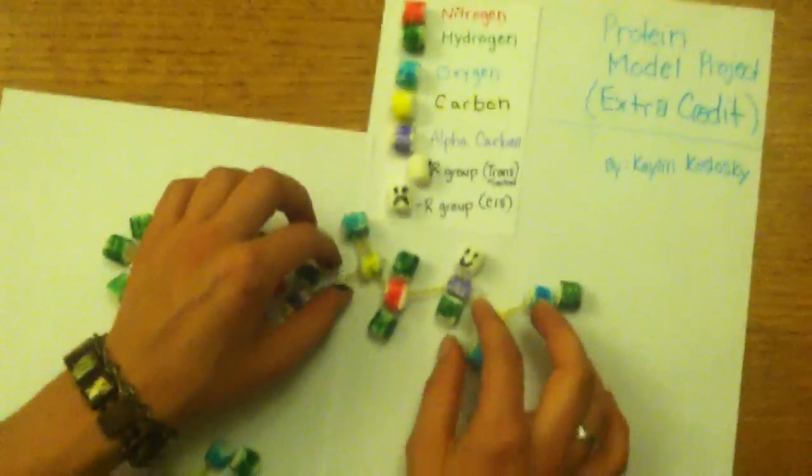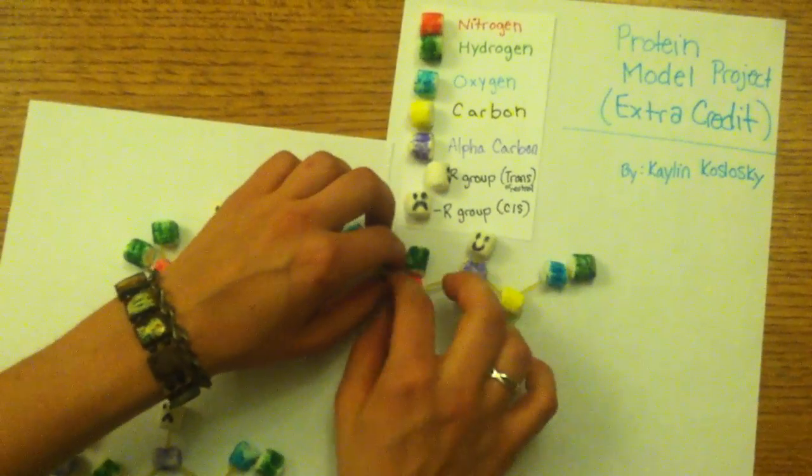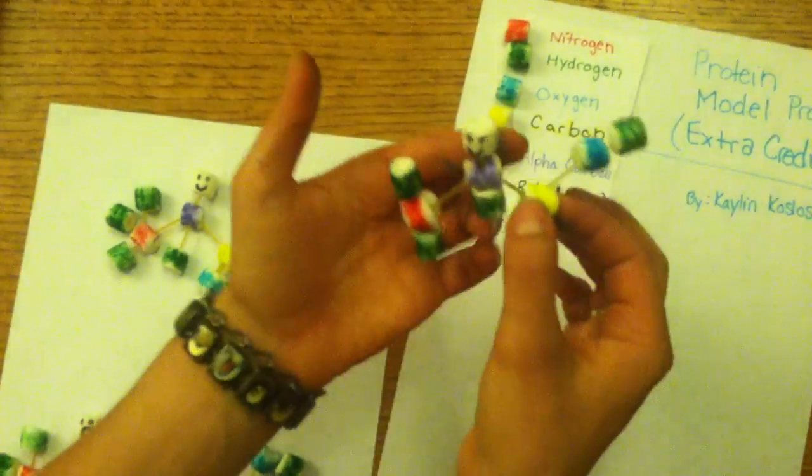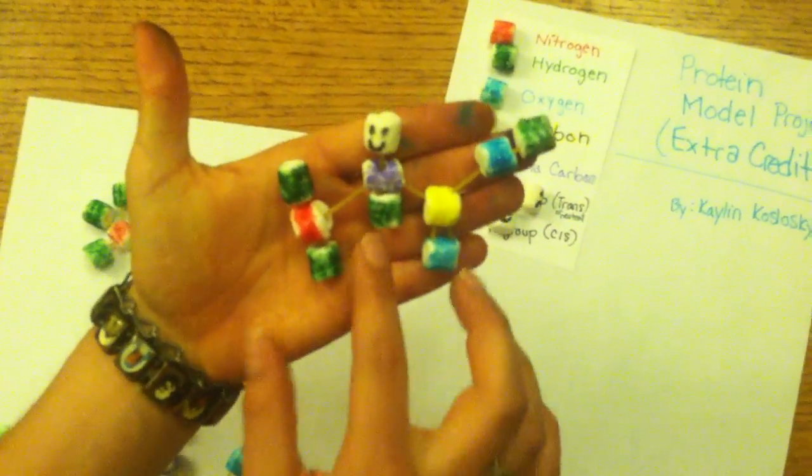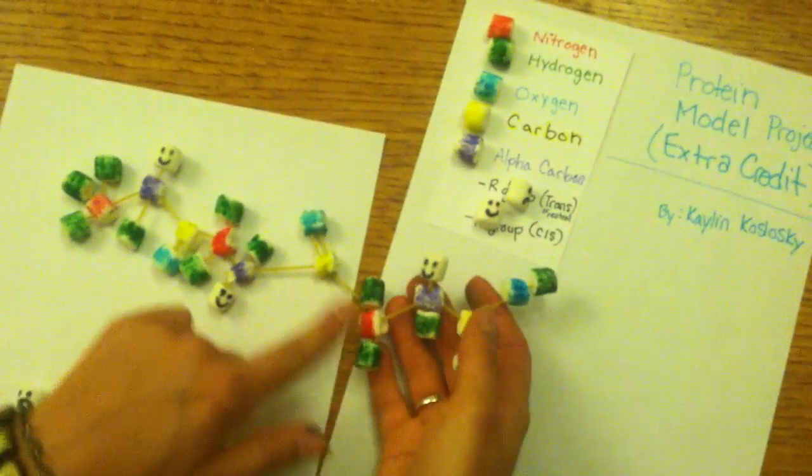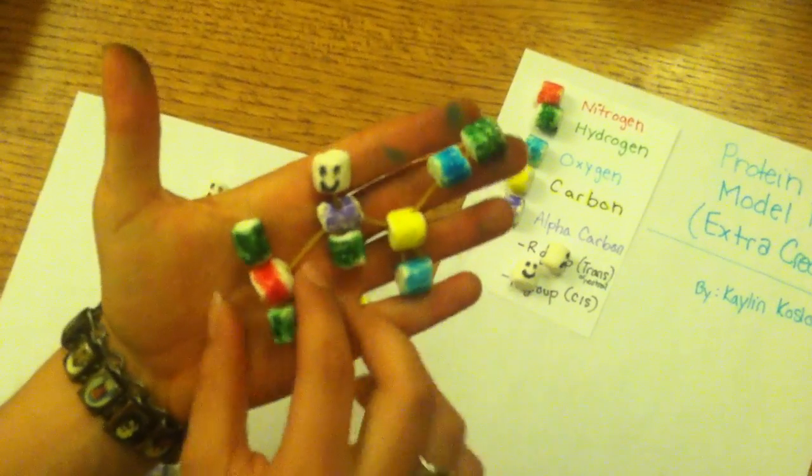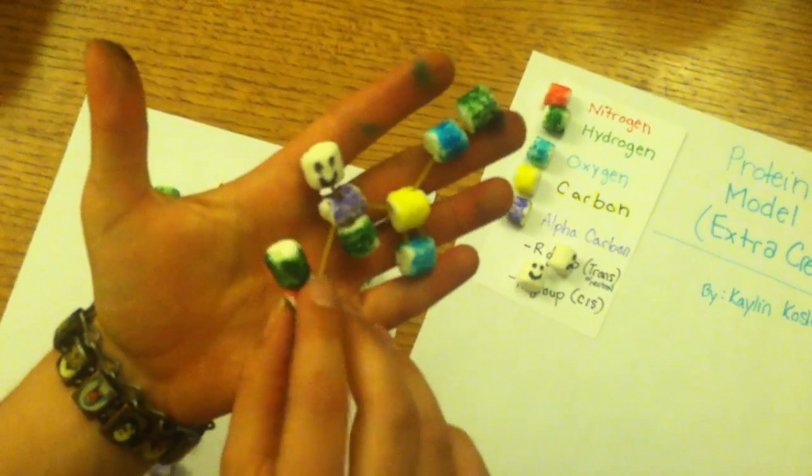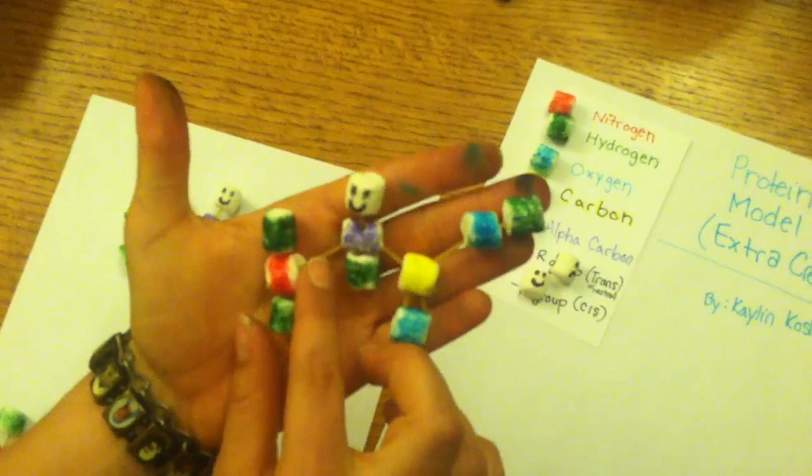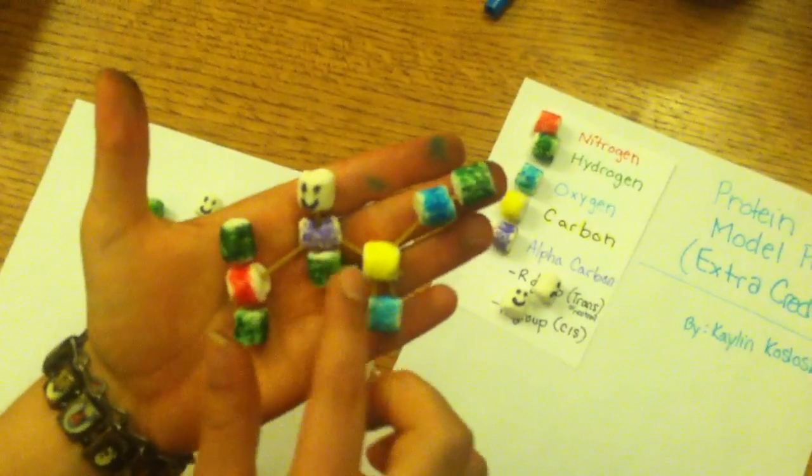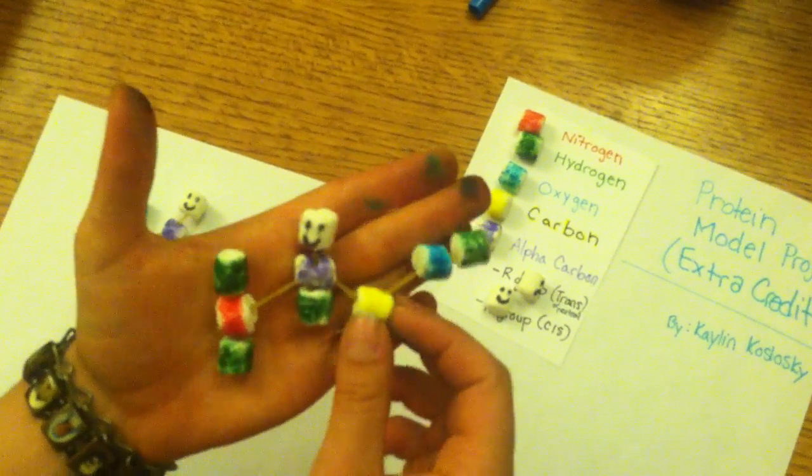And then over here I'm going to detach this amino acid again in order to show rotation. So this was the peptide bond that I just broke off again, but the bond in between the nitrogen and the alpha carbon, if any rotation here happens, that's called the phi rotation, and from the alpha carbon to the carbonyl carbon is called psi rotation.